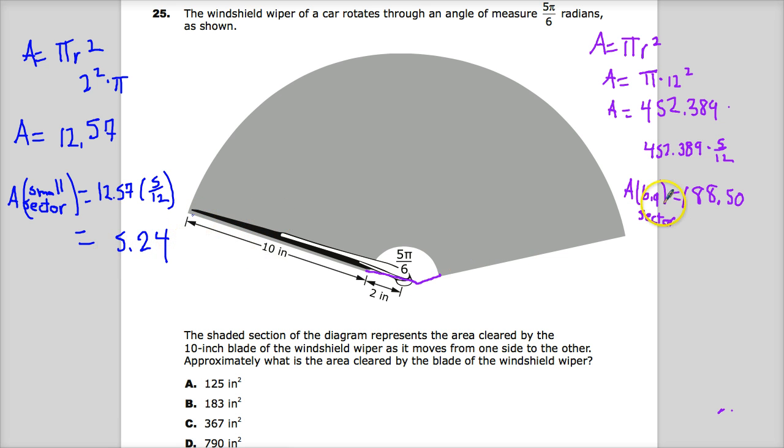Now, to find my final answer, I just subtract the small from the big. 183.26, so 183, so your answer is B.